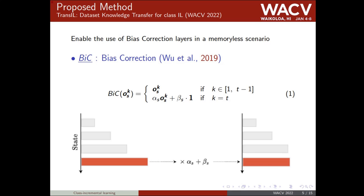The goal of our method is to enable the use of a bias correction layer in a memory-free setting. The bias correction layer helps balance the classification output scores of new and past classes. This layer is based on two calibration parameters called alpha and beta, which are used to reduce the scores of new classes to give more chance to past classes to be selected during inference.